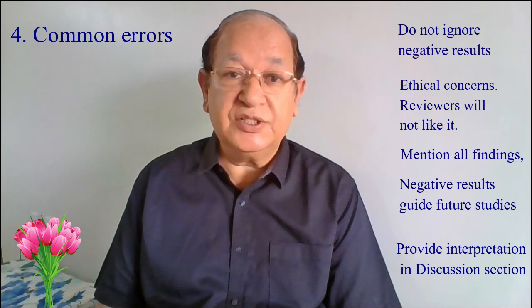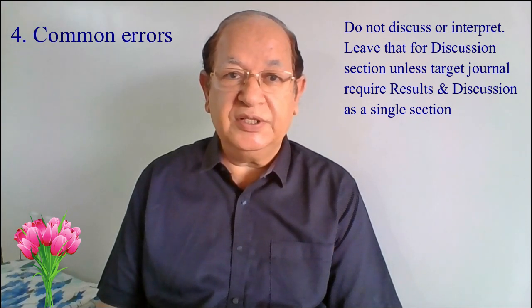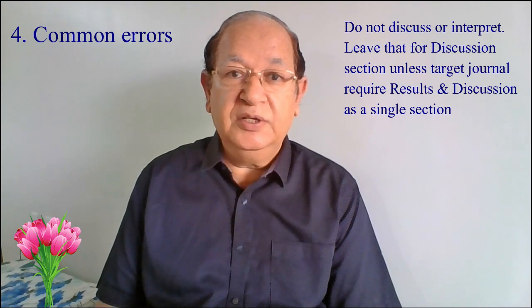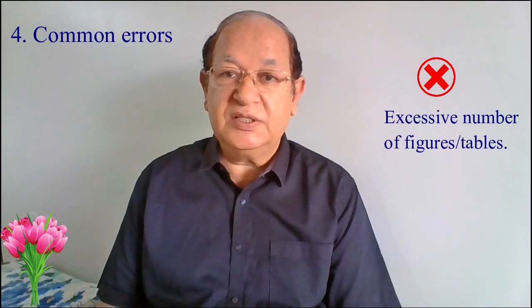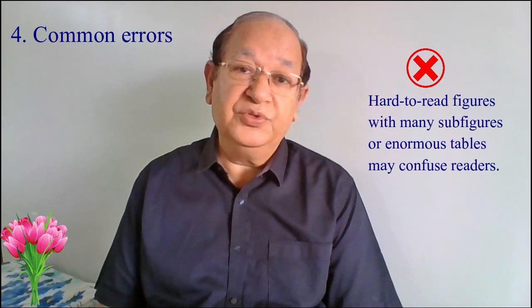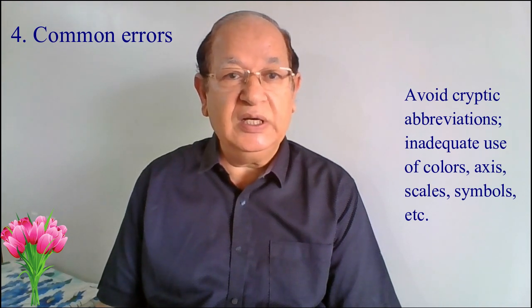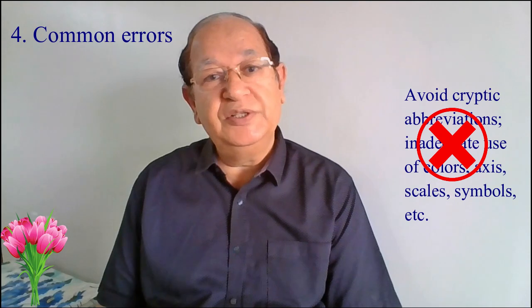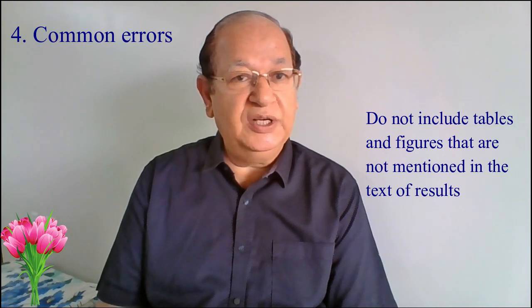Provide your interpretation for negative results in the discussion section. Do not discuss or interpret results in the results section — leave that for the discussion, unless your target journal allows a combined results and discussion section. Examples of errors include using an excessive number of figures and tables, hard-to-read figures with many sub-figures, or enormous tables that may confuse the reader. Avoid cryptic abbreviations and inadequate use of colors, axis scales, and symbols. Do not include tables and figures that are not mentioned in the body text of your results section.